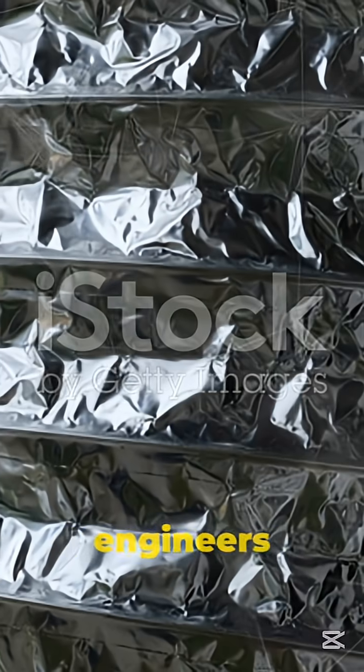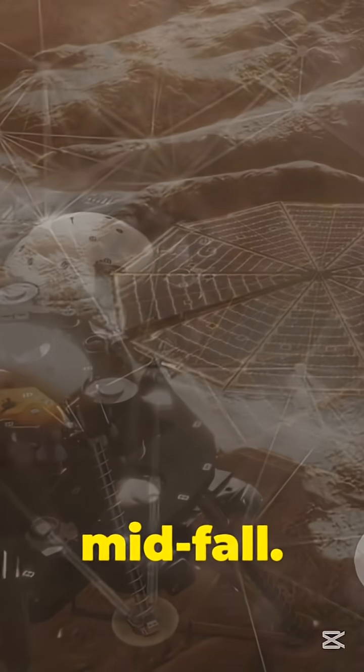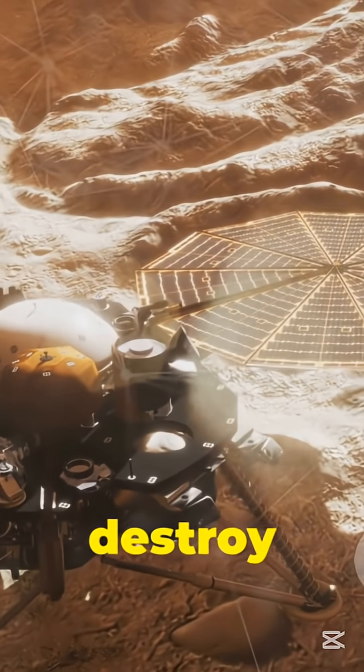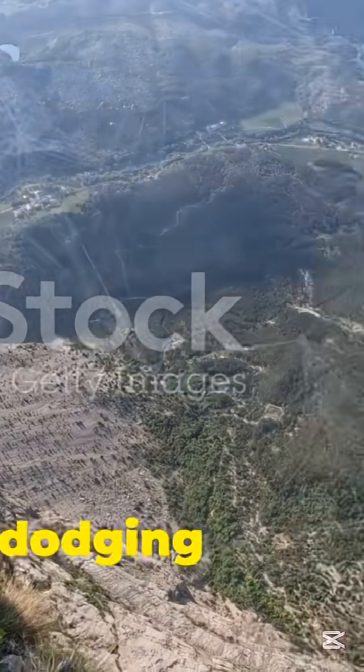But here's the part that actually blew engineers away. The lander carries a guidance system that learns the terrain mid-fall. If it spots a rock that could destroy it, it literally shifts its descent in seconds, like a skydiver dodging a mountain.